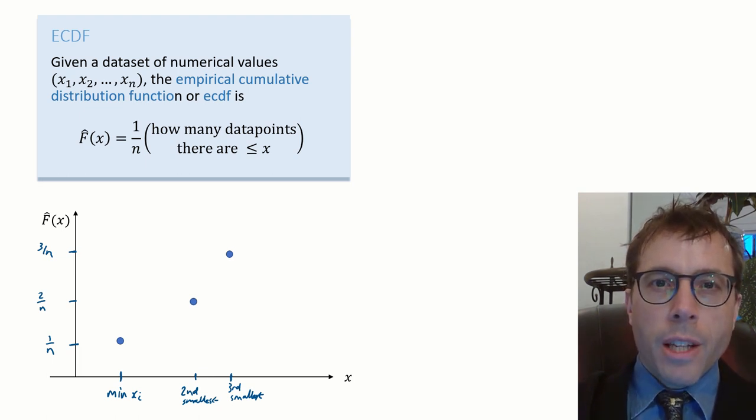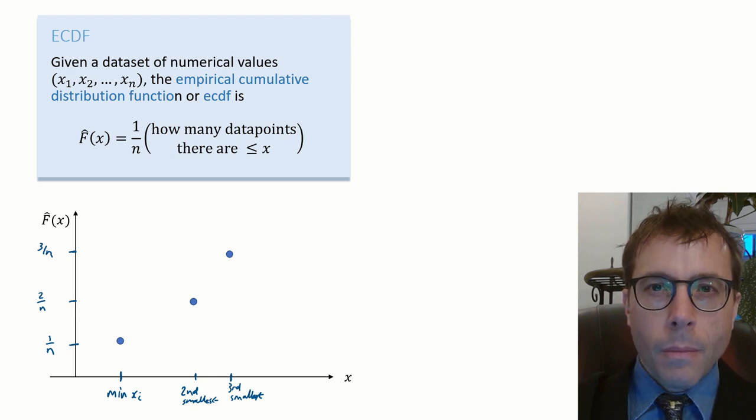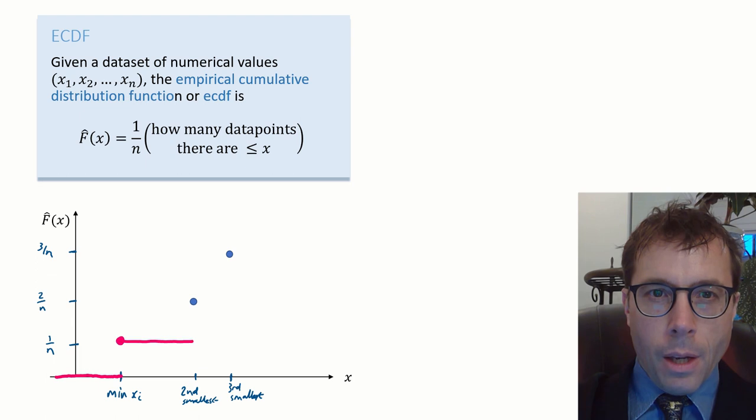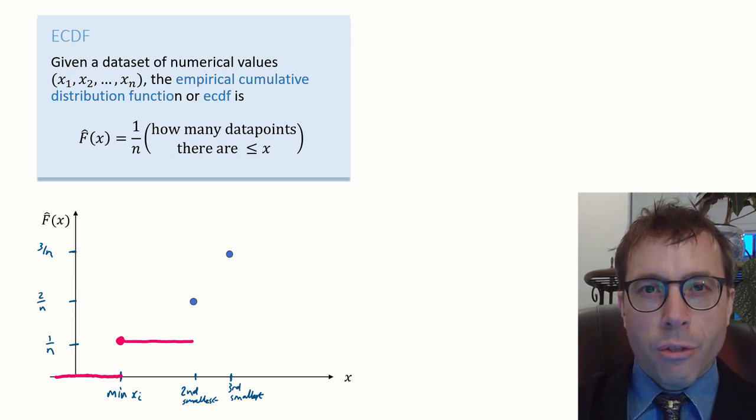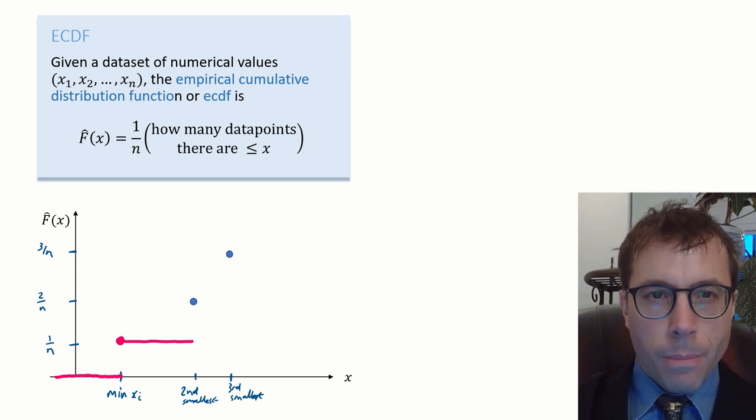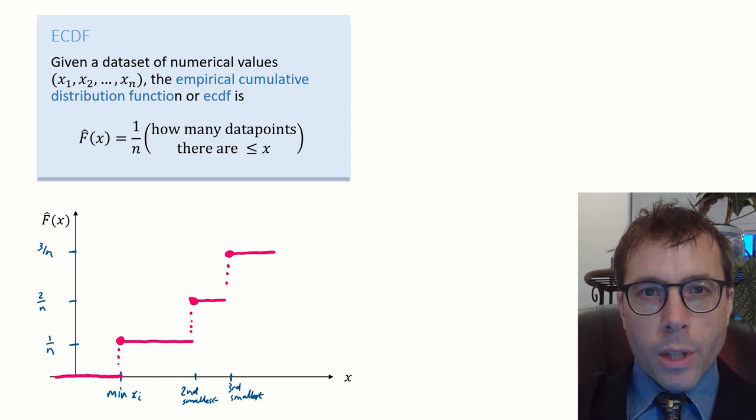Next, let's think about the value of f hat of x in between these points. For any x smaller than the minimum value, f hat of x is equal to zero because there are no points. For any x in between the smallest and the second smallest, the number of data points that this definition scoops up doesn't change. It's still just one data point, so f hat of x is flat between these two values. And we can fill in the rest of the f hat function like this. It's a step function.